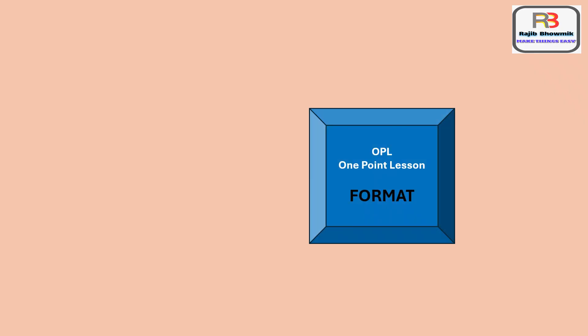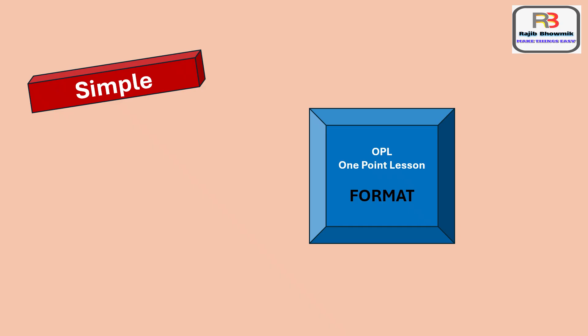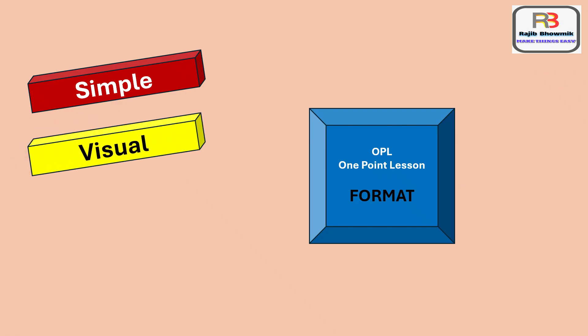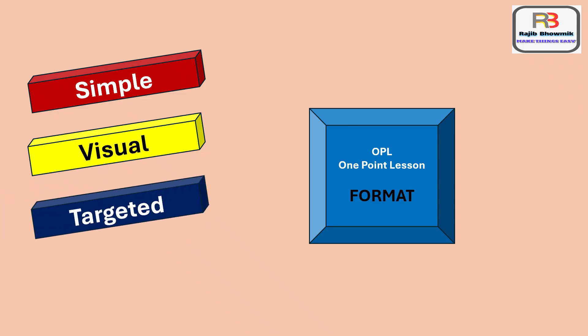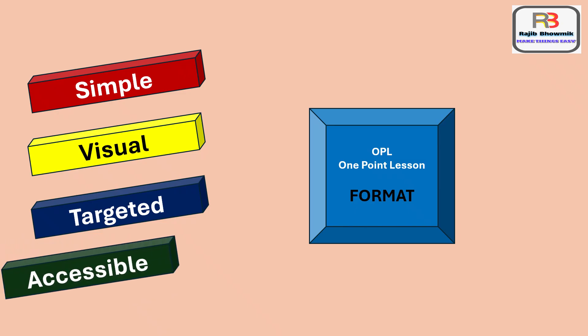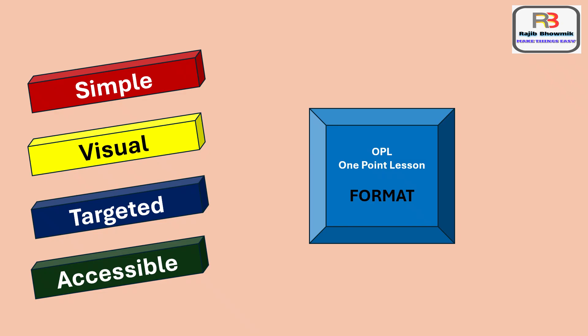While designing the OPL format, a few things are to be considered. It should be simple, that means easy to understand at a glance. Visual, that means it uses images or diagrams for clarity. Targeted, that means it focuses on one specific task or topic. Accessible, that means it is placed where it is easily seen and referenced during work.